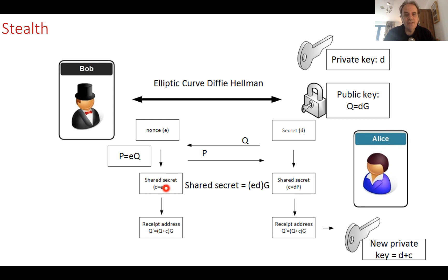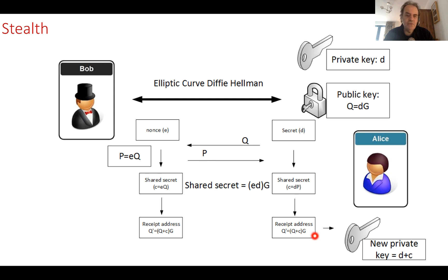The problem with this approach is that both Bob and Alice would know the key, so Bob could sign away the transaction again. So they generate a new receipt address instead. Alice has her own address, but a new address is determined for Bob to send the bitcoins to. Because of this modification, Alice is able to generate the private key associated with the public key address of this new address.